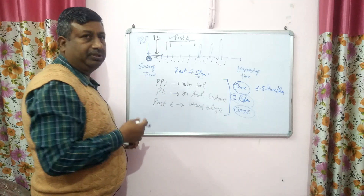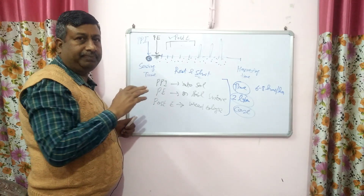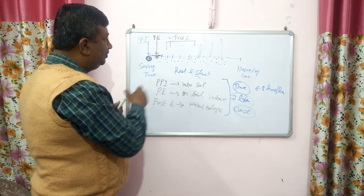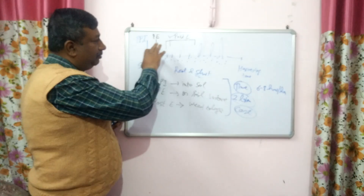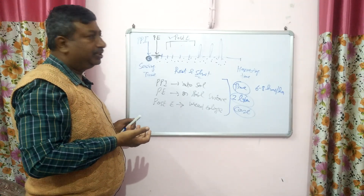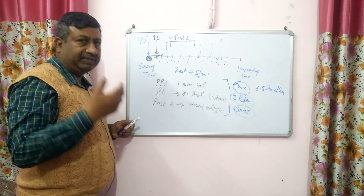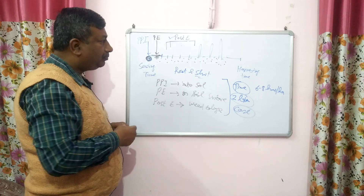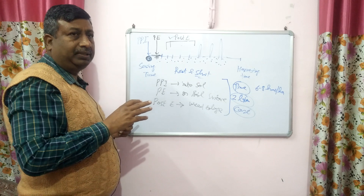Investment on these herbicides is very low and they are effective — results are seen quickly. Farmers have the choice to apply herbicide at any stage — pre-emergence or post-emergence. So there is flexibility in spraying, and there are a number of herbicides available as choices.